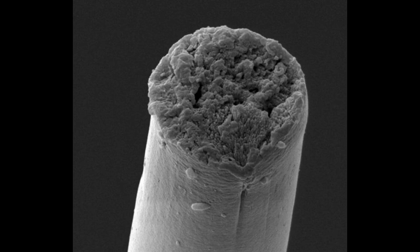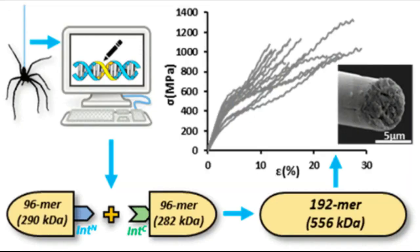Researchers in the School of Engineering and Applied Science at Washington University in St. Louis have engineered bacteria that produce a biosynthetic spider silk with performance on par with its natural counterparts in all of the important measures.